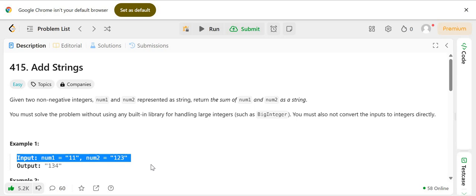Let's see how we can solve this problem. So we have been given two strings. One is num1 which is 456 and another one is num2 which is 77. So basically we have to sum both the strings.